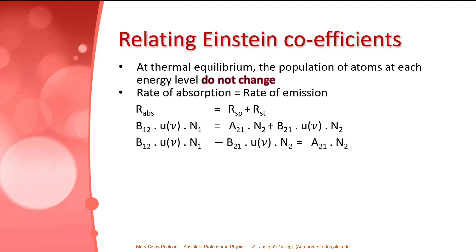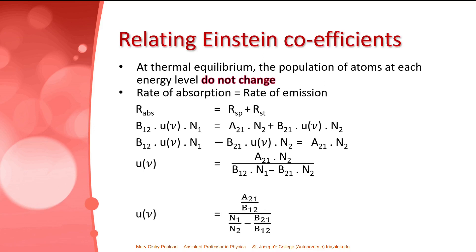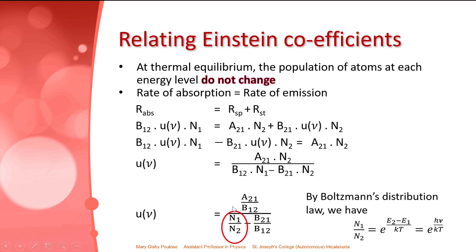Rearranging the terms, we get u(ν) = A21·n2 / (B12·n1 − B21·n2). Dividing numerator and denominator by B12·n2, we get u(ν) = (A21/B12) / (n1/n2 − B21/B12). The term n1/n2 is substituted using the Boltzmann distribution: n1/n2 = e^((E2−E1)/kT) = e^(ΔE/kT) = e^(hν/kT).